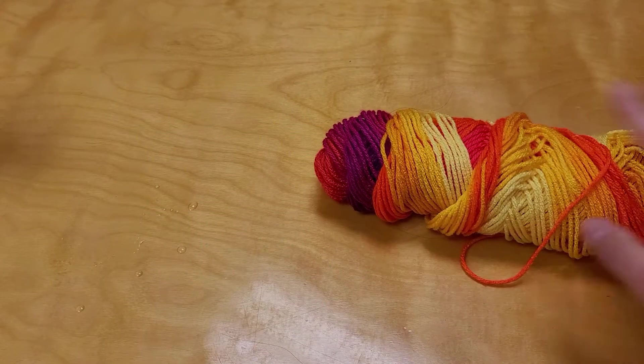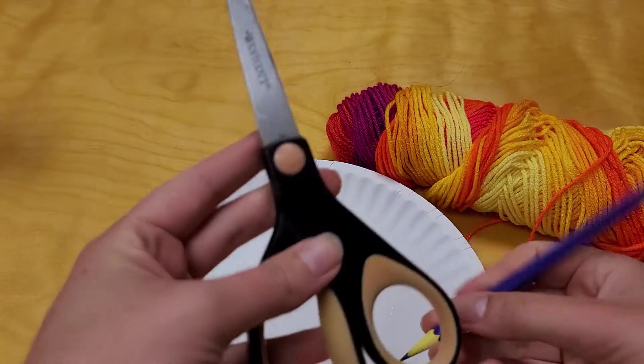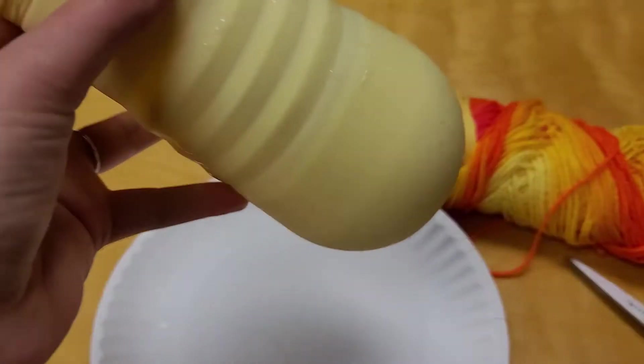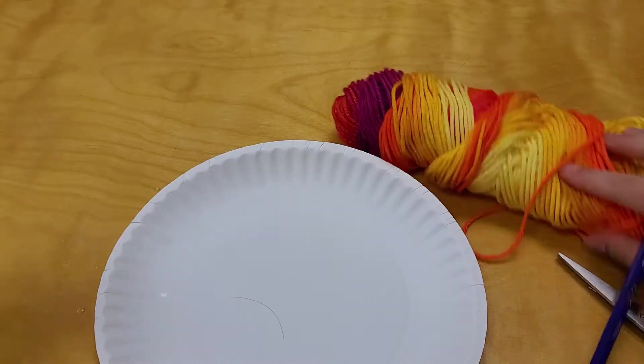You are going to need some yarn, a plate, a pencil, some scissors, and something circular so you can trace it for the base.